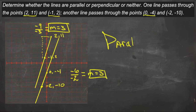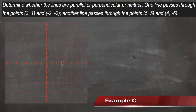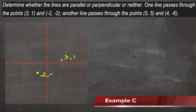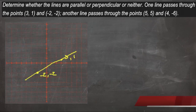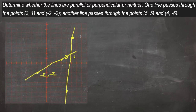Our last example gives us the points (1, 2), (3, 1), and (-2, -2) for one line — I'll sketch that here. The other line goes through (5, 5) and (4, -6). I'll plot those points and sketch that line in as well.